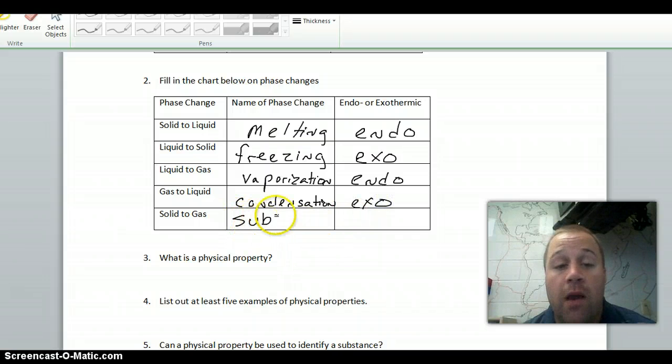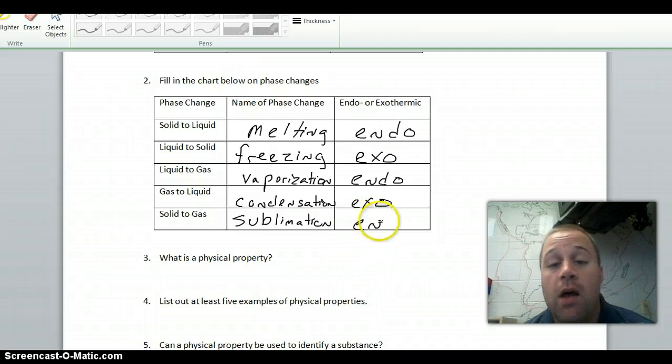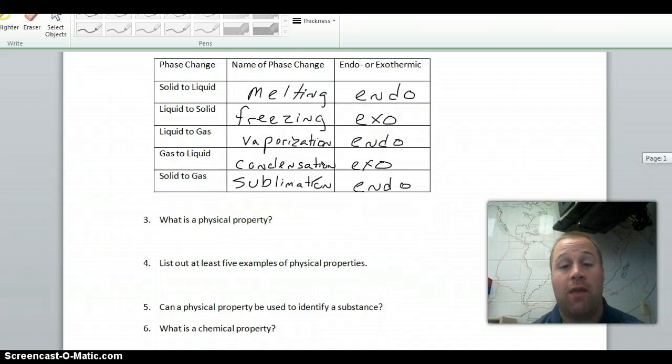From a solid to a gas is what we saw with dry ice. This is sublimation. And to go from sublimation, to go from a solid to a gas, you're going from something very ordered to something not ordered basically at all. So you're going to go endothermic. You have to gain energy for that to happen.